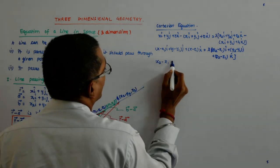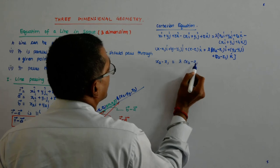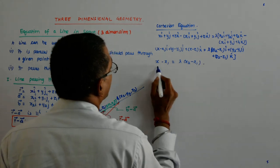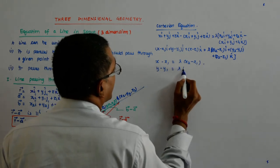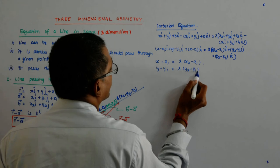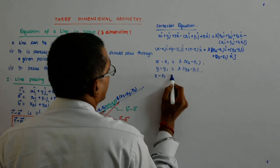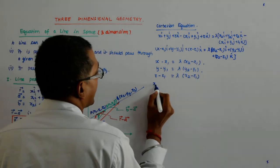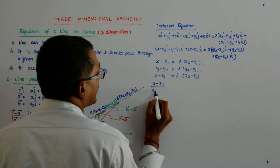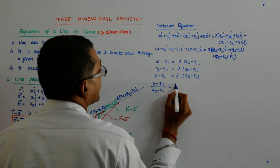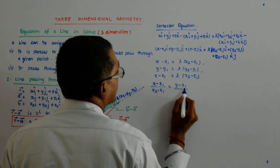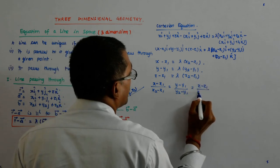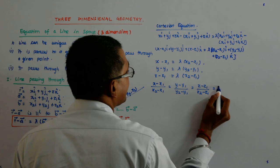So, x minus x1 is lambda times x2 minus x1, y minus y1 is lambda times y2 minus y1, z minus z1 is lambda times z2 minus z1. Now, it gives me x minus x1 upon x2 minus x1 is equal to y minus y1 upon y2 minus y1 is equal to z minus z1 upon z2 minus z1 is equal to lambda.